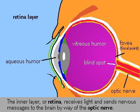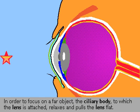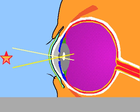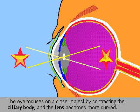The lens of the eye is elastic and its curvature can be changed by the ciliary body to focus on a particular object. To focus on a far object, the ciliary body relaxes and pulls the lens flat. To focus on a near object, the ciliary body contracts and the lens becomes more curved.